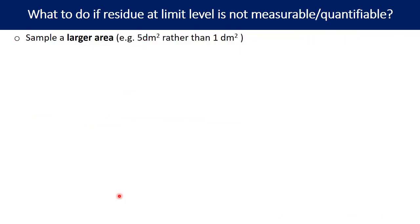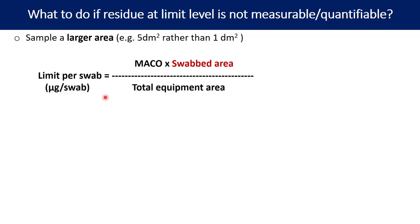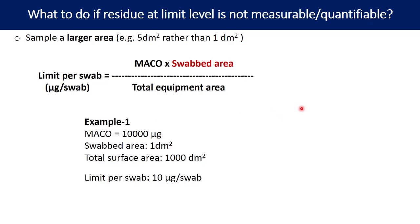Another way to address poor analyte response is by using a larger sample area. If you are using a swab technique to collect leftover residue from equipment surfaces, the limit per swab (in micrograms) is calculated as: MACO multiplied by swab area, divided by total equipment area. Let us say the MACO for your product is 10,000 micrograms.